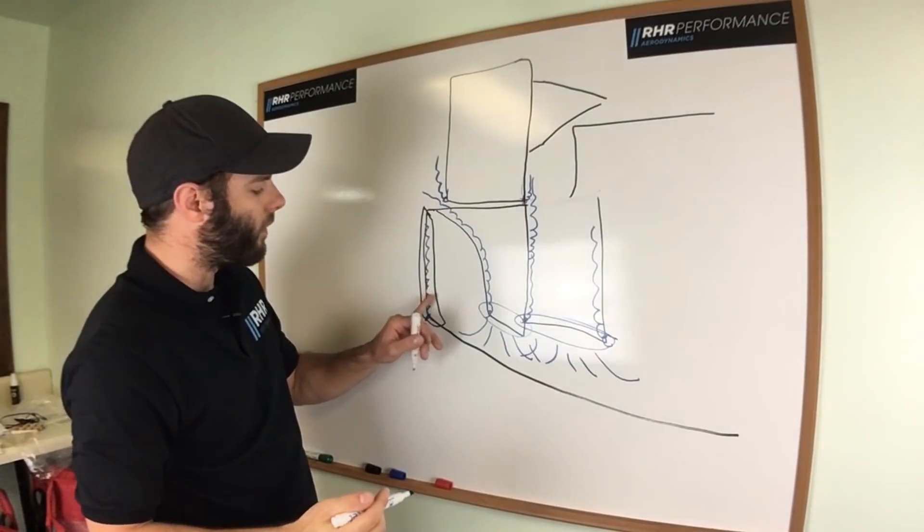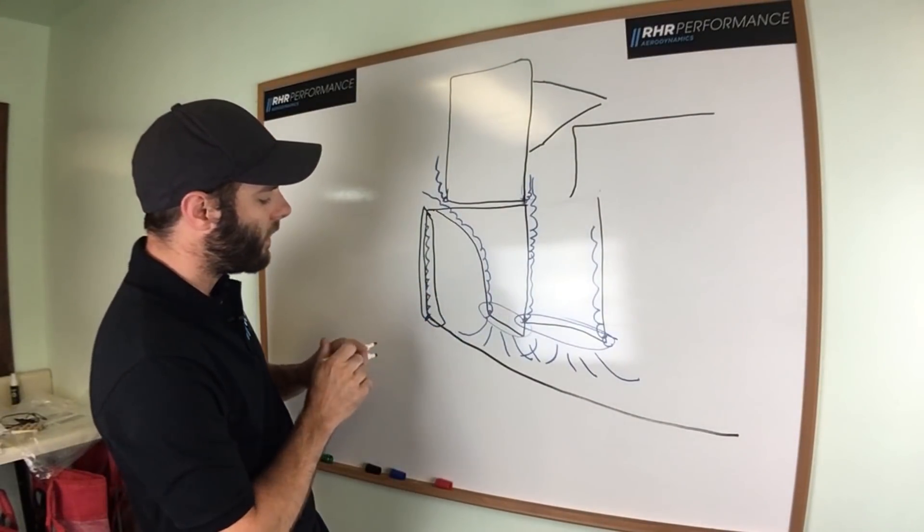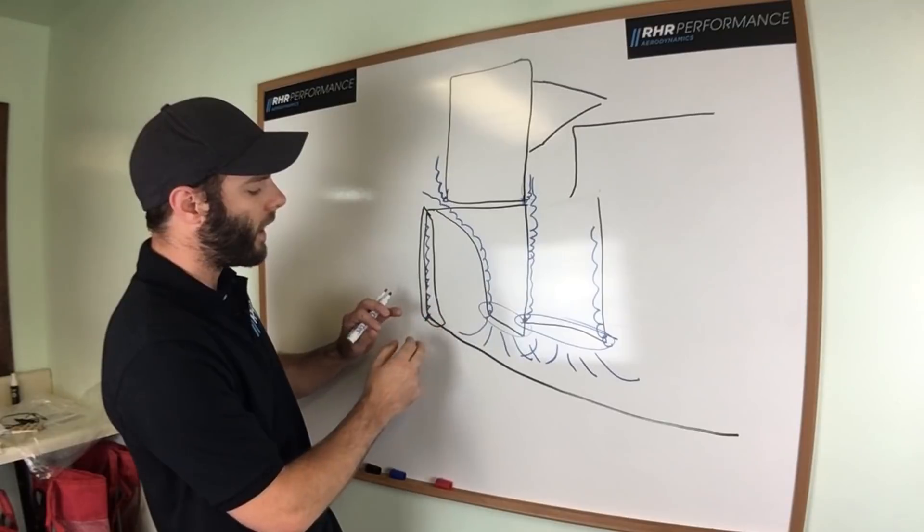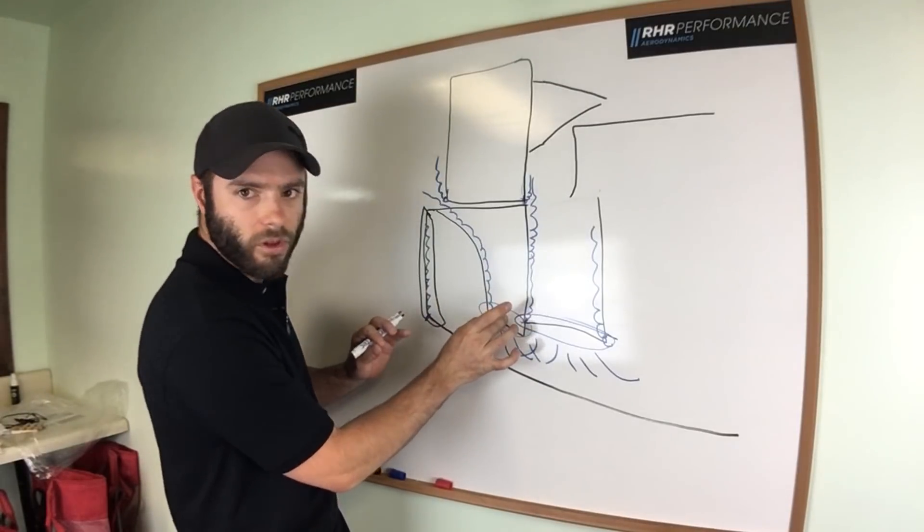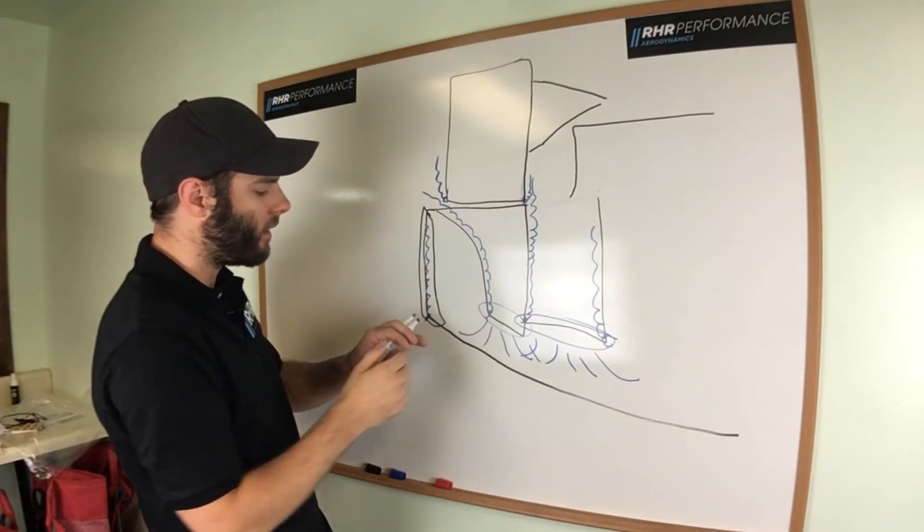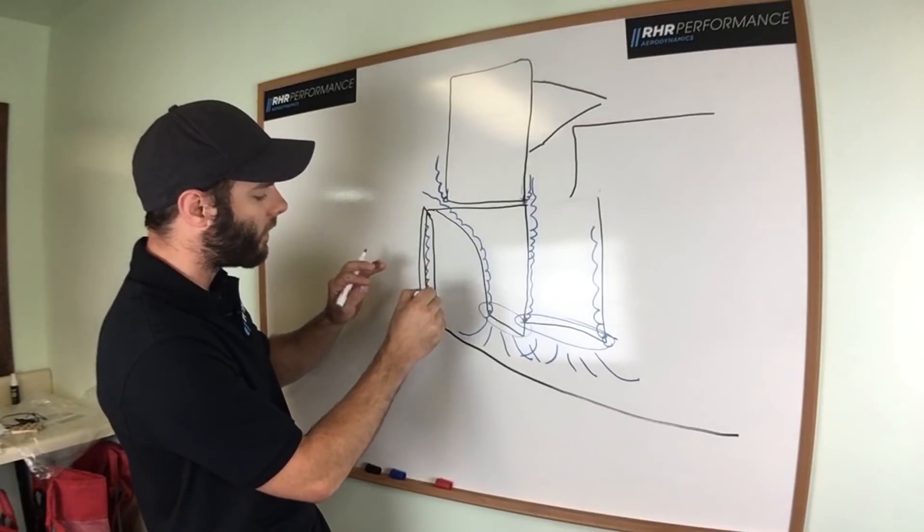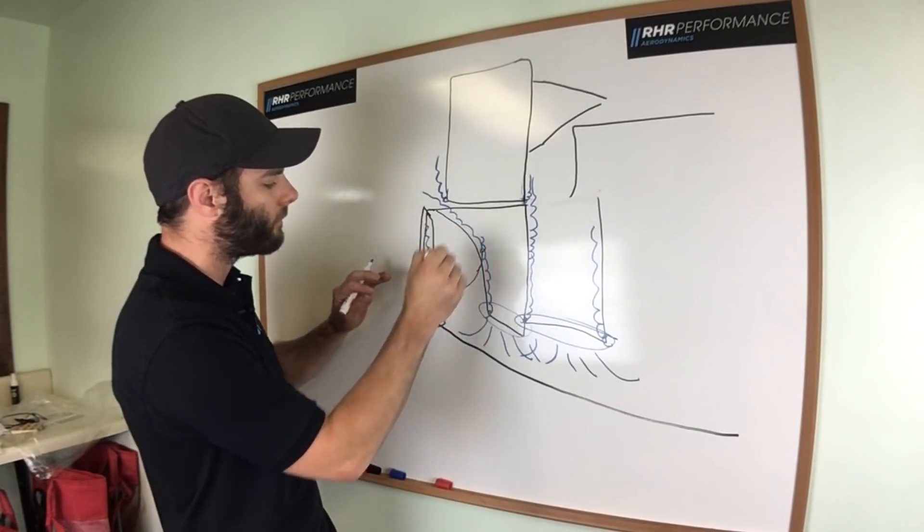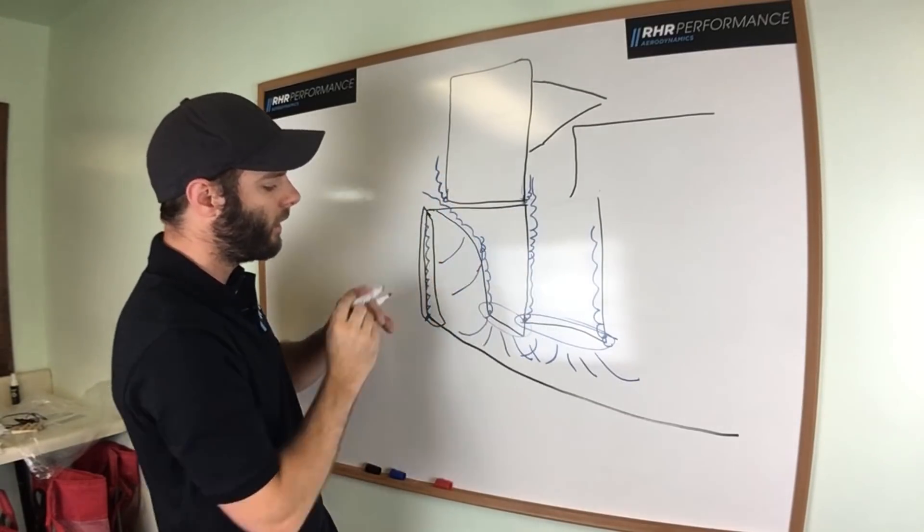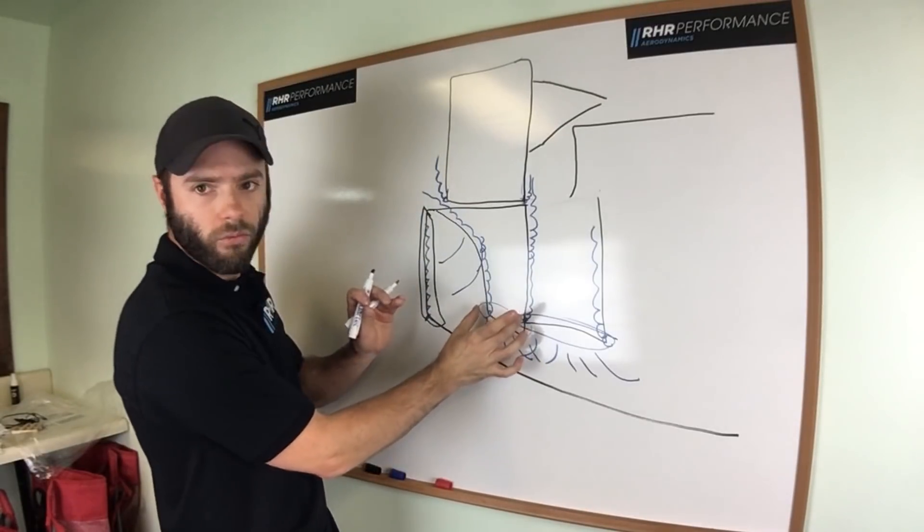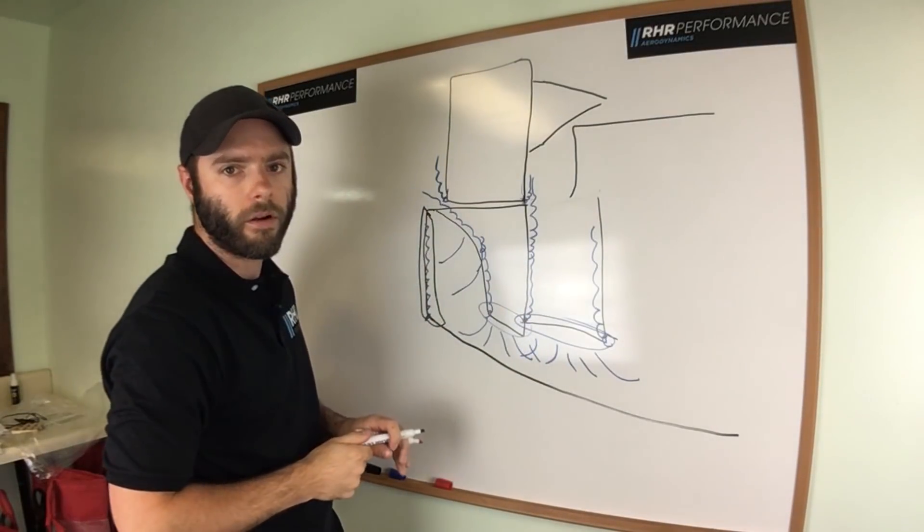but underneath it creates an extra low pressure zone underneath the edge of the splitter. That, again, works the splitter harder, but it also creates a little less of a want for air to go to the extra low pressure zone created by the tunnel. So rather than having air slip onto your splitter and enter somewhere around here, it'll want to pull more through the throat of the tunnel, again, working the tunnel harder.